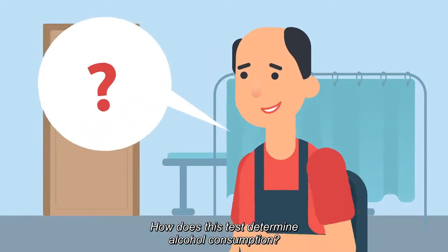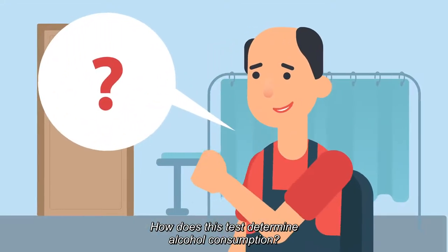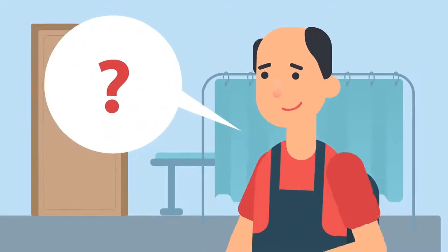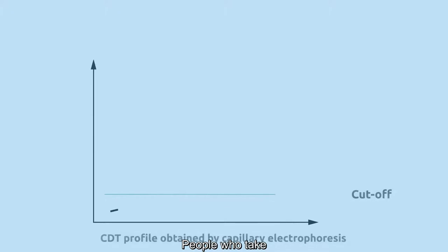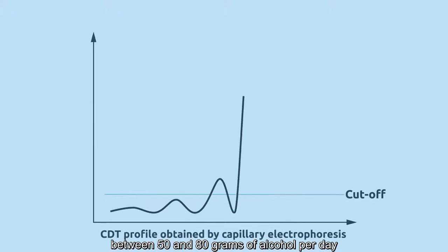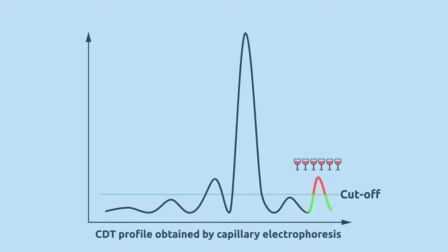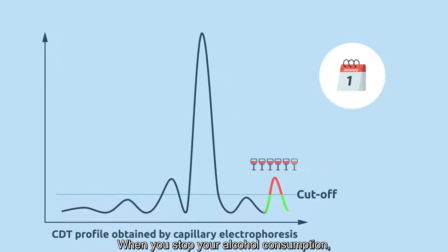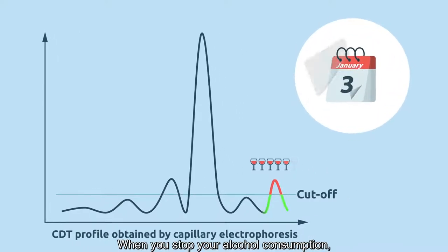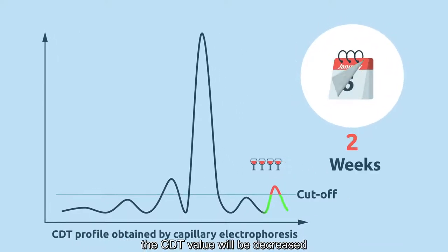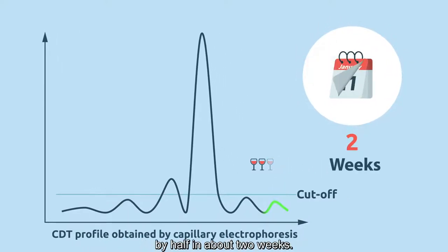How does this test determine alcohol consumption? People who take between 50 and 80 grams of alcohol per day have higher CDT levels. When you stop your alcohol consumption, the CDT value will decrease by half in about 2 weeks.